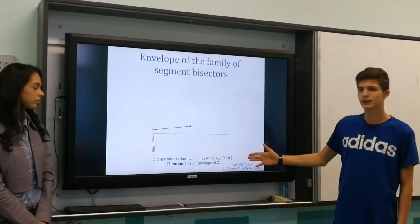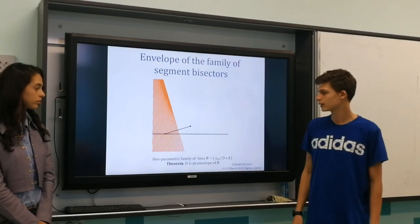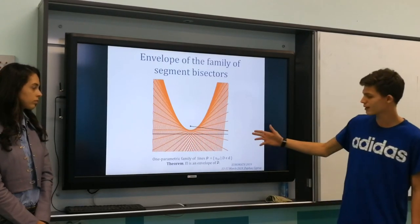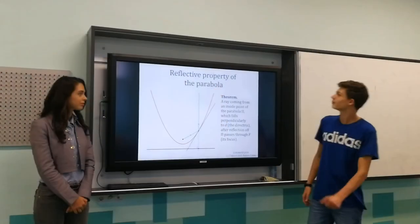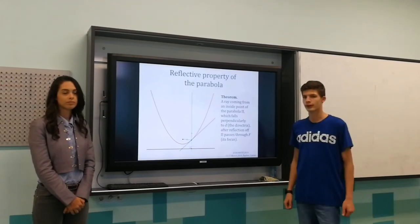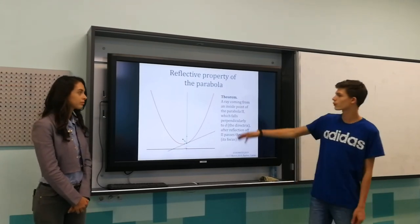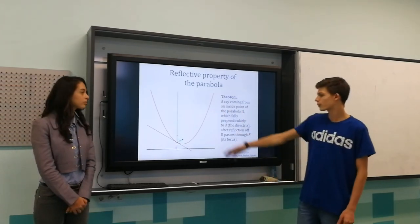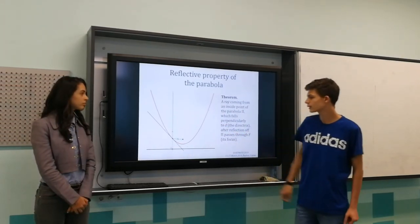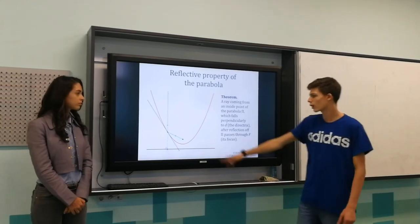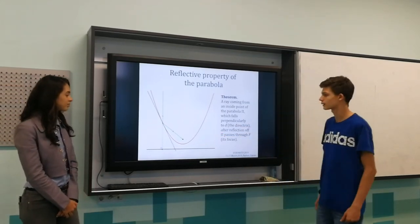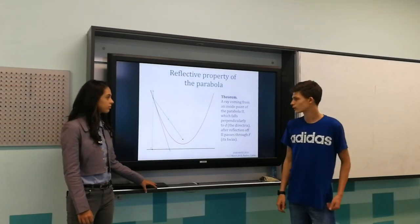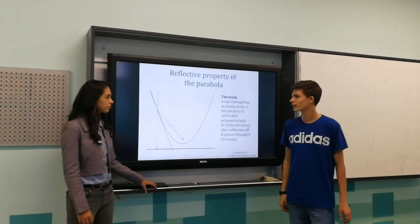The theorem states that the parabola P is an envelope of this family of lines. The parabola also has a reflective property: a ray coming from inside the parabola, directed perpendicularly to the directrix, after reflection off the parabola passes through its focus. In this animation, we can see a visual representation of the reflective property.